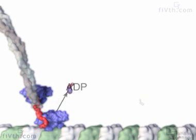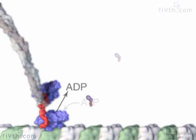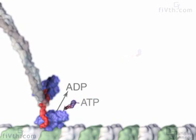Microtubule binding causes ADP to be released from the attached head. ATP then rapidly enters the empty nucleotide binding site.